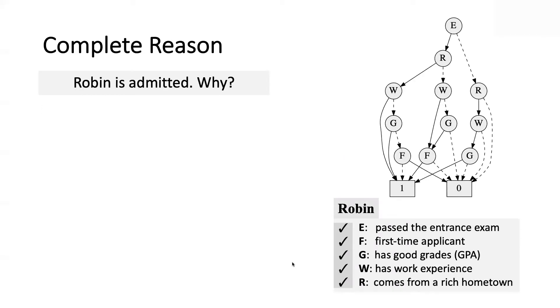Here's a concrete example to illustrate that. We have an applicant, Robin, and here are the characteristics of Robin. She was admitted. We asked why. And it turns out there are five sufficient reasons behind the decision on Robin. And if I'm, for example, trying to do a decision bias, I want to know if this decision was biased or not, then I have to enumerate these and check them one by one.